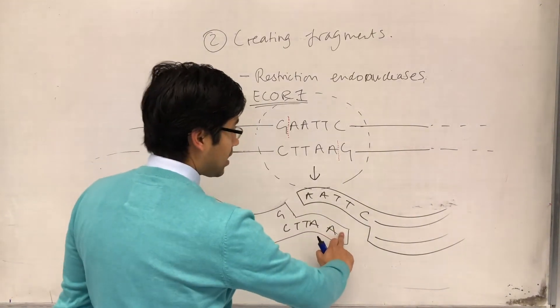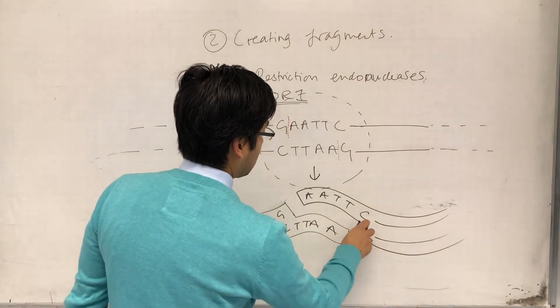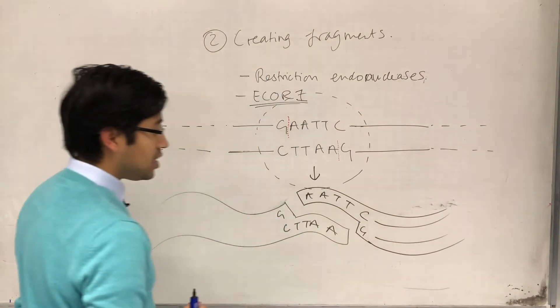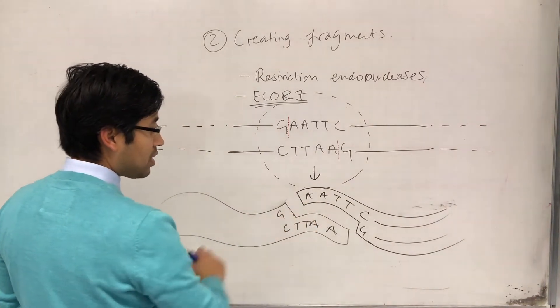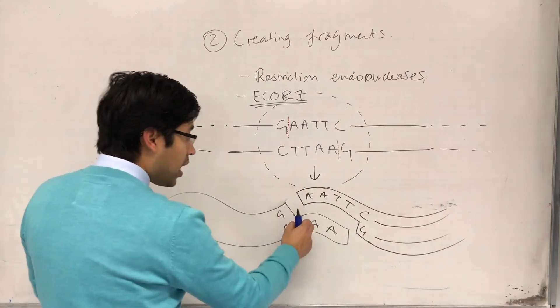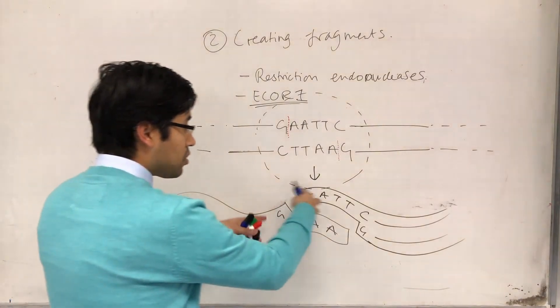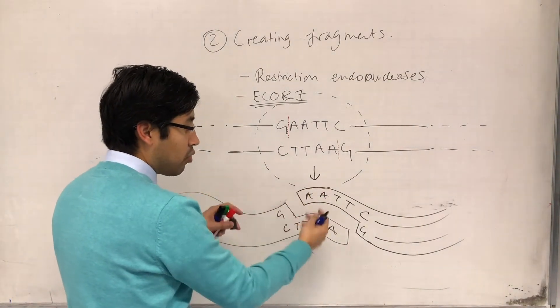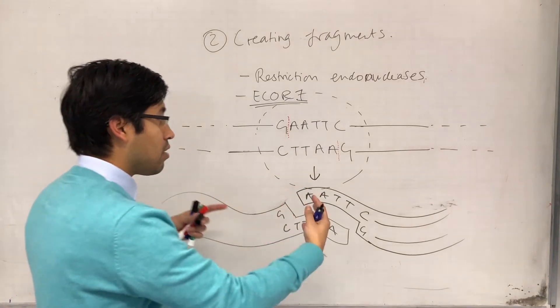Because we've separated that A from that G, and we've separated that A from that G, and so there were hydrogen bonds holding the A and the T together, but without the covalent bonds, the hydrogen bonds themselves are not enough to hold these two.